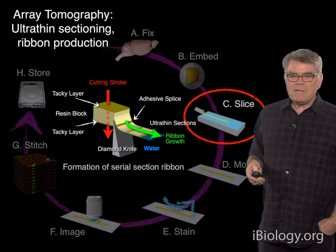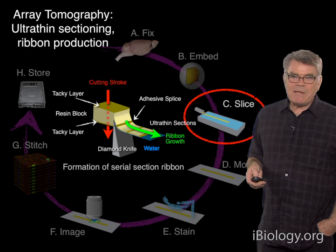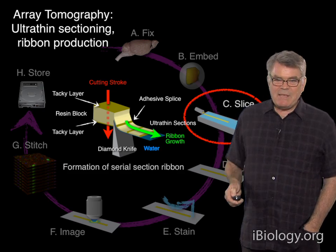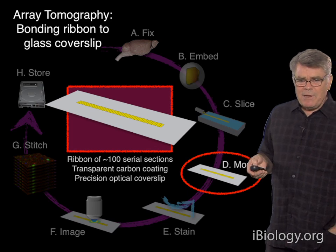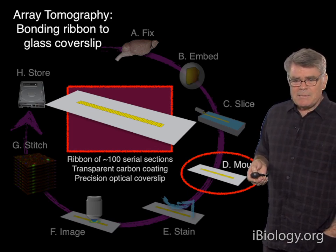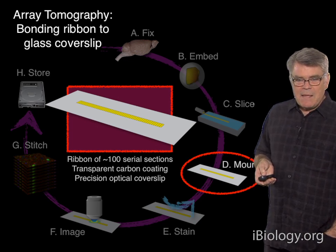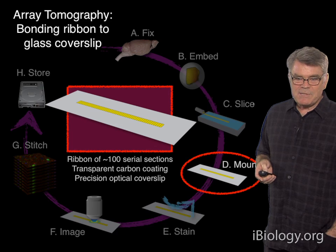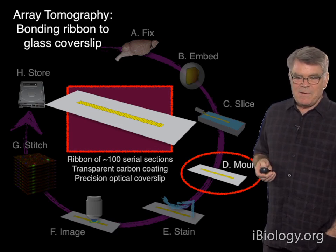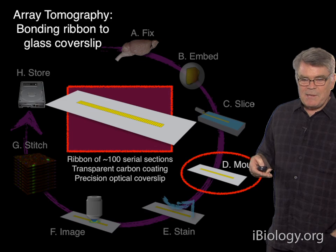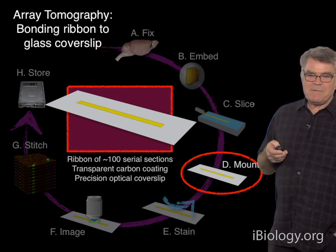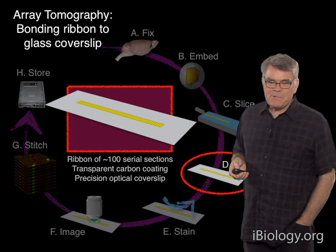The big difference here is we're going to make much longer ribbons. Whereas traditional electron microscopists make ribbons that are two millimeters long and put them on tiny little EM grids, we grow those ribbons to be 40 or 50 millimeters long and pick them up on specially prepared precision optical cover slips. We reach the cover slip down into the water of that little blue boat. The result is a cover slip with a neat row of on the order of a hundred serial sections. A permanent adhesive bond forms between the ribbons and the cover slip. That is the array that gives its name to array tomography.